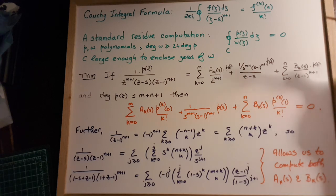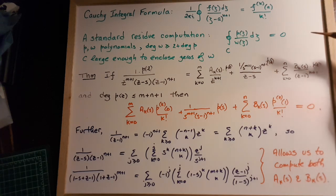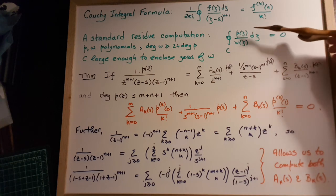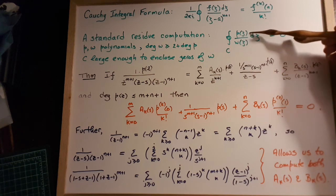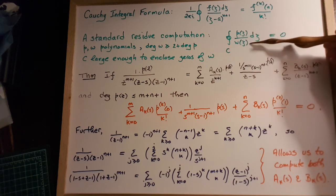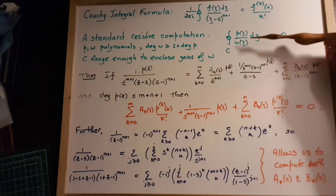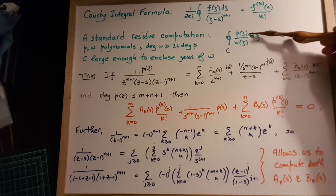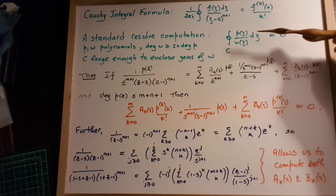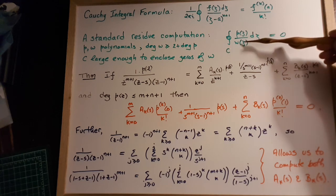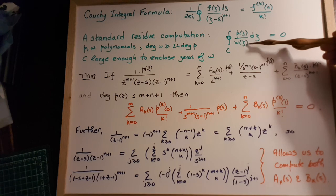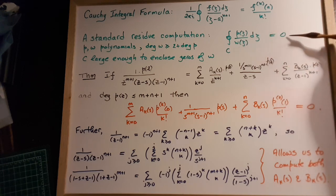We will also use a standard residue computation that says that the contour integral of a polynomial divided by another polynomial, where the degree of the polynomial on the bottom is at least two higher than the degree of the polynomial on the top, and if you integrate it over a contour large enough to contain all of the zeros of the polynomial on the bottom, then the resulting integral must be 0.